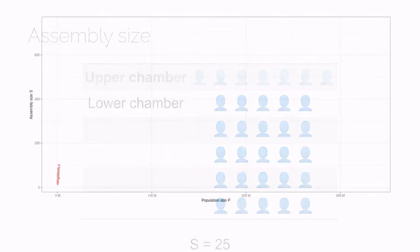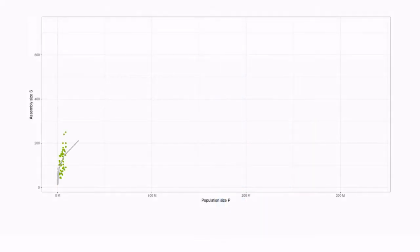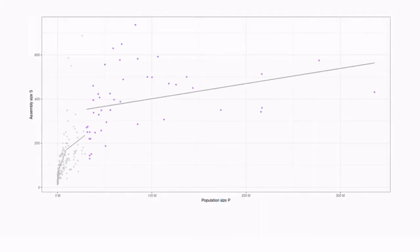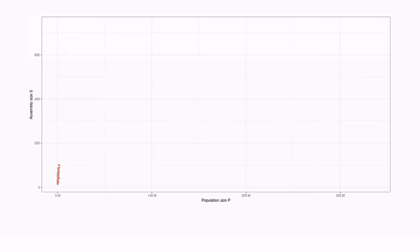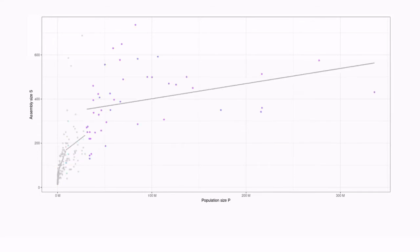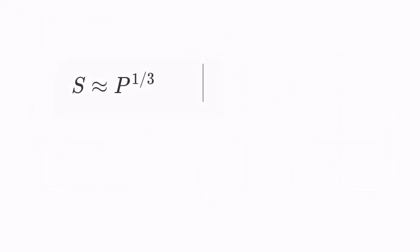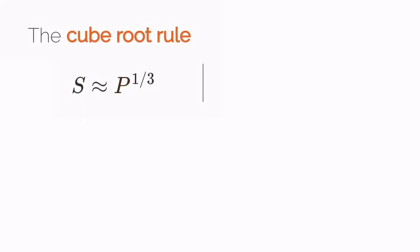Assembly size can vary hugely across systems, usually in response to differences in population. One rough rule of thumb is that the size of the assembly, which I'll refer to as s, is proportional to the cube root of a country's population, or p. This is known as the cube root rule. We can flip that around and say that if you take assembly size and cube it, you should get the population of that country.